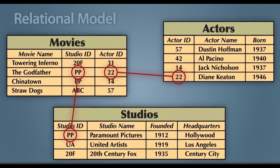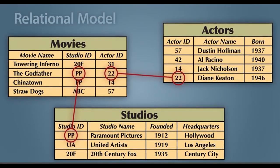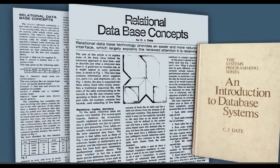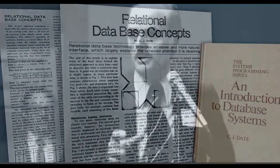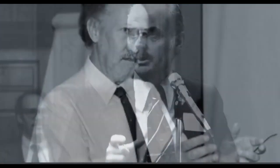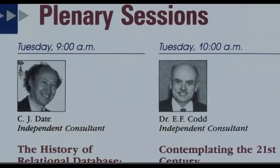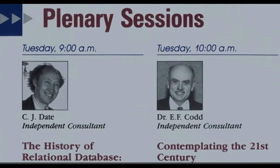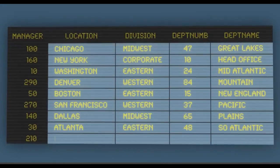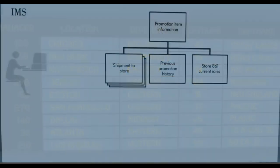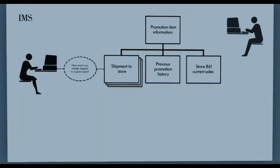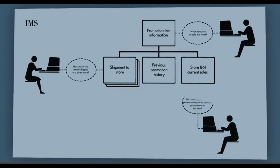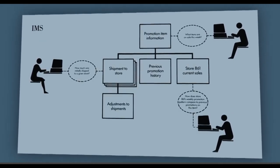This made it easier to access, merge, and change data. Later came CJ Date, an IBM instructor and author, who was convinced that the relational database was a pretty good model. Codd and Date wrote papers, lectured, and debated its merits. However, Codd's relational database competed with other IBM products, so IBM was reluctant and slow to support the new idea.